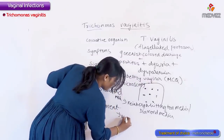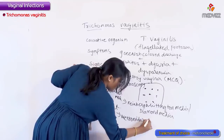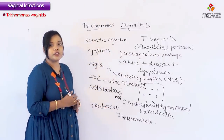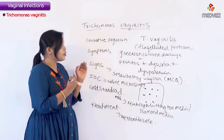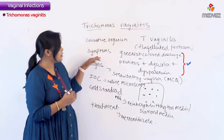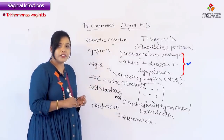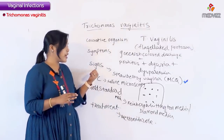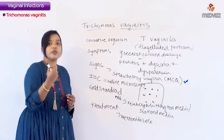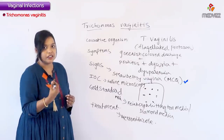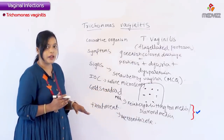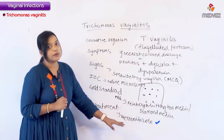The treatment is metronidazole. To summarize trichomonas vaginitis: causative organism is Trichomonas vaginalis, a flagellated organism; symptoms are greenish color discharge with pruritus, dysuria, and dyspareunia; the important sign is strawberry vagina — also described as an angry-looking vagina with punctate red dots that bleed when removed; investigation of choice is saline microscopy; gold standard culture media is Feinberg-Whittington or Diamond media; treatment is metronidazole, even in pregnancy.